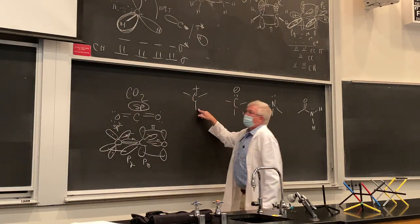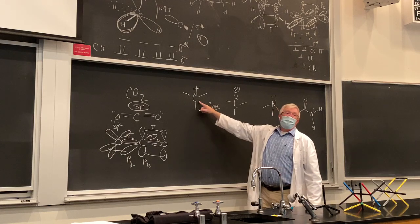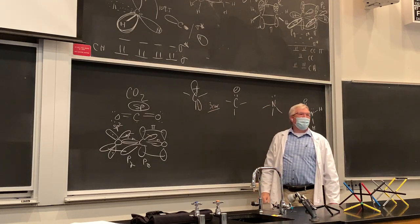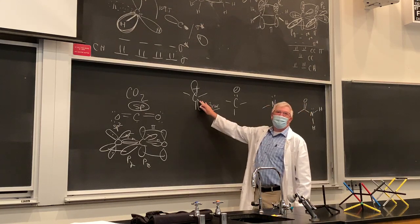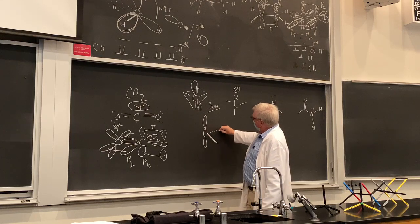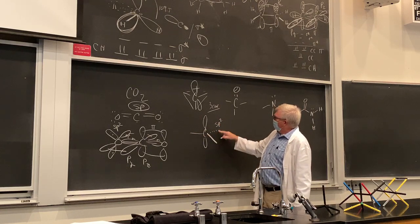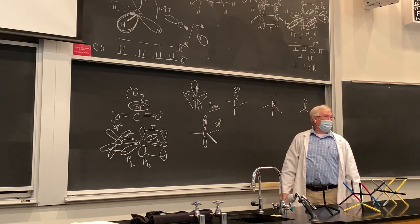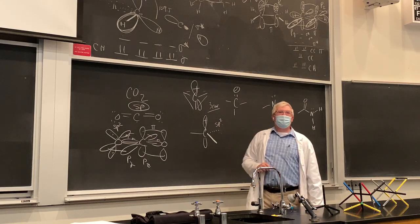What about a carbocation? How many things are bonded? Three — three coordinate. There's an empty orbital on carbon — it's actually a p atomic orbital left behind. It's the same geometry used for ethylene — trigonal planar, sp² hybridization. The three sp² orbitals are re-hybridized, and the empty p atomic orbital bears the positive charge. SP² hybridization for carbocation.